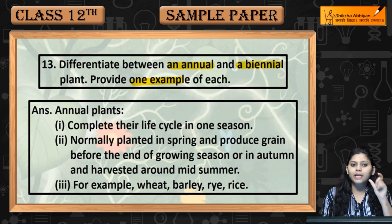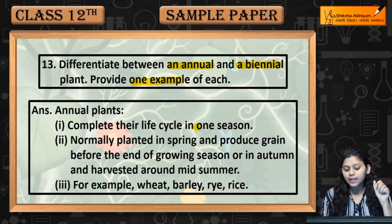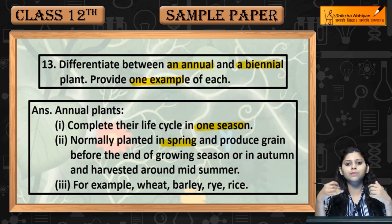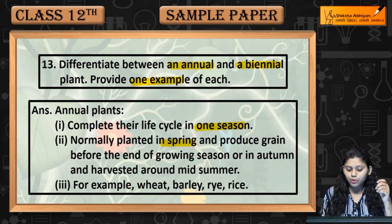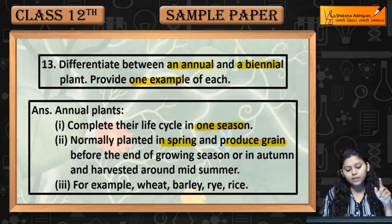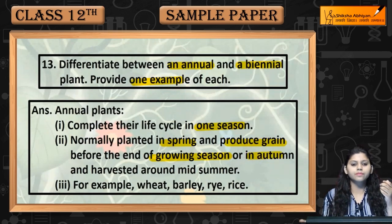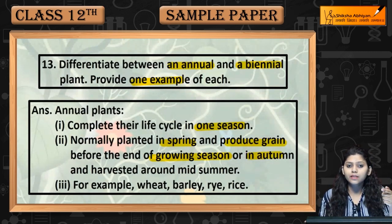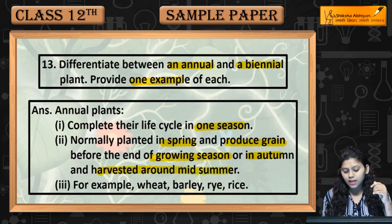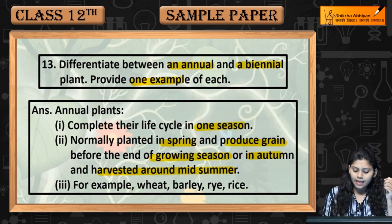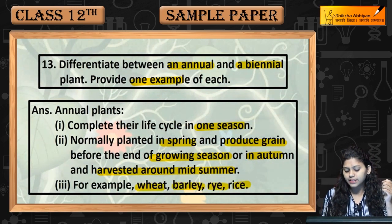Annual plants complete their life cycle in one season. They are normally planted in spring and produce grain before the end of the growing season, or in autumn. They are planted in spring, produce grain in autumn, and are harvested around midsummer. Examples include wheat, barley, rice, and rye.